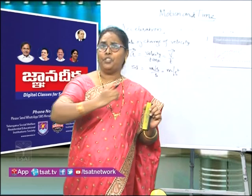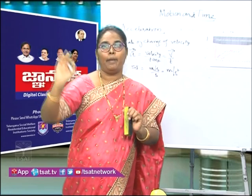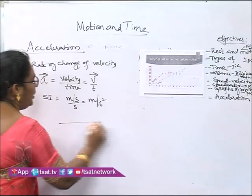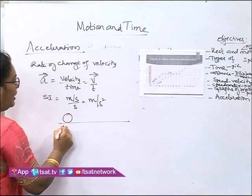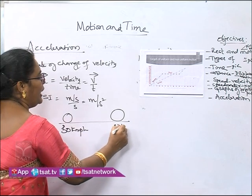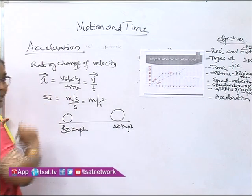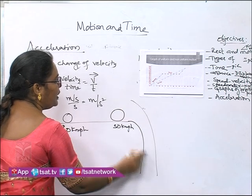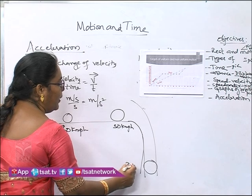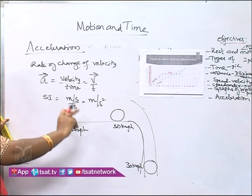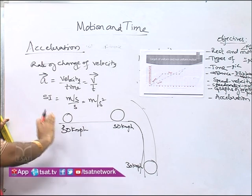A train leaving the station slowly increases its speed from zero to maximum — we say it is moving with acceleration. When a body moves in a straight line at a constant speed of 30 km/h, it does not possess acceleration. But when it takes a curvilinear path and its direction changes, there is a change in acceleration — even though the speed is constant, its direction changes, which is why we say the body possesses acceleration.